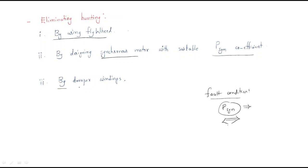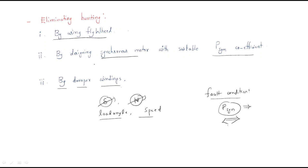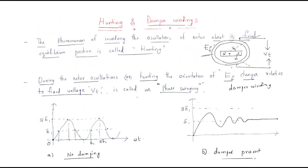The third method is by using damper windings. Due to hunting, both the load angle and speed vary. To control these two things, damper windings are more preferred than the flywheel method and the synchronizing power coefficient method. I hope all of you understood the session — thank you.